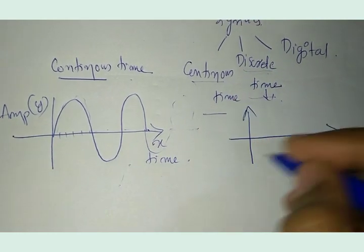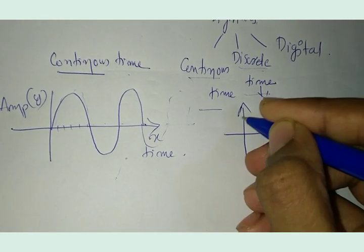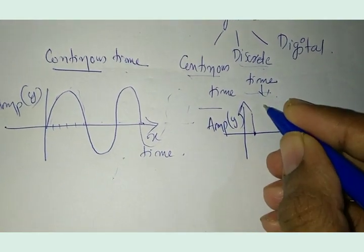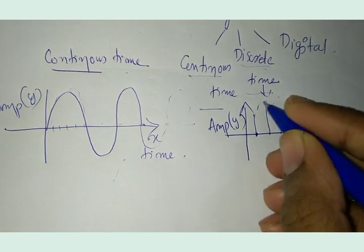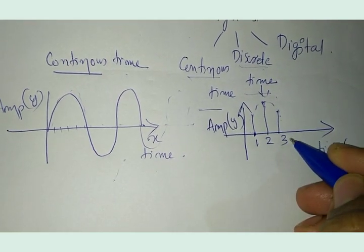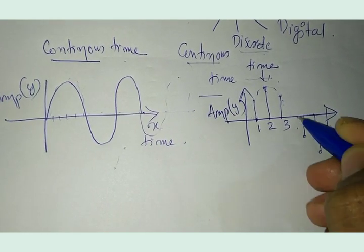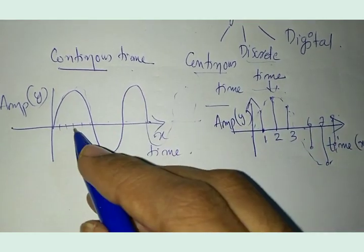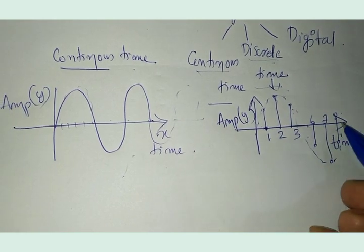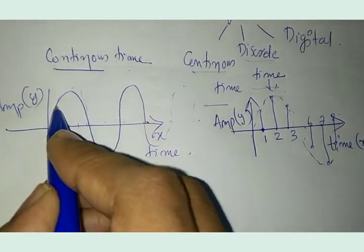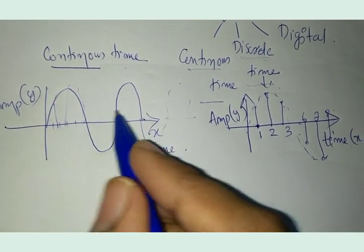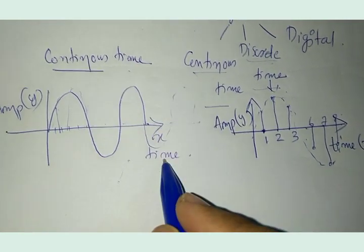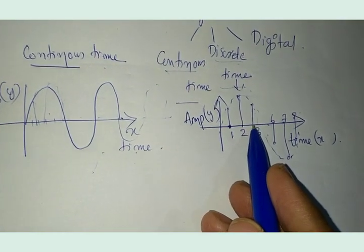Let me explain with a graph. With time in the x-axis and amplitude in the y-axis, the signal has values only at discrete time points — say at points 1, 2, 3, 6, 7, 8. The continuous time signal has values at all points, whereas the discrete time signal has values only at those discrete points. It is obtained by sampling the continuous time signal, which gives you sample points from it.